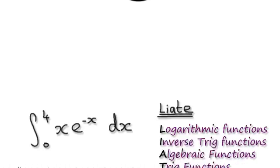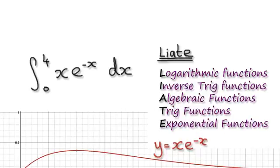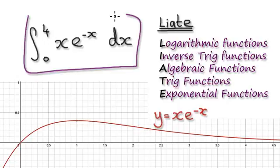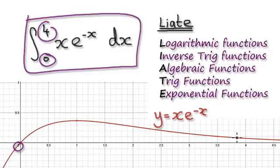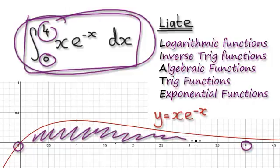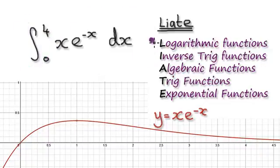Let's work through an example of a definite integral. We're going to integrate this from 0 to positive 4. What we're doing here is working out the area underneath this line from 0 to 4.